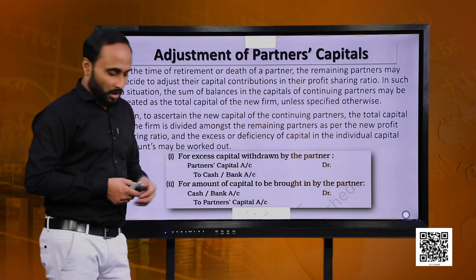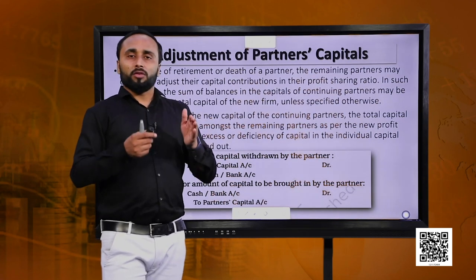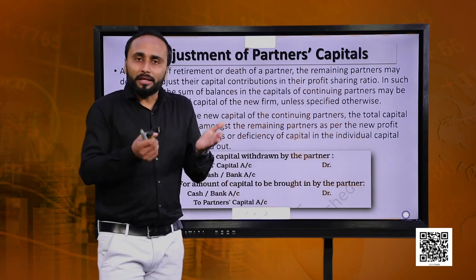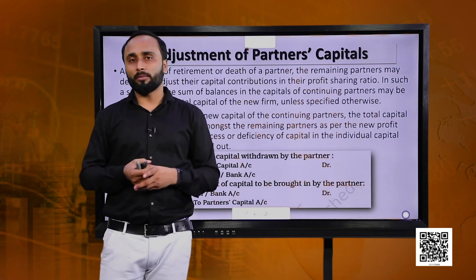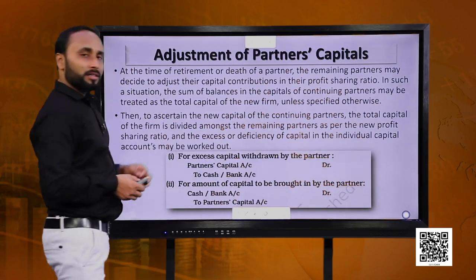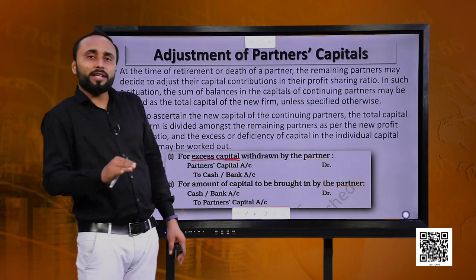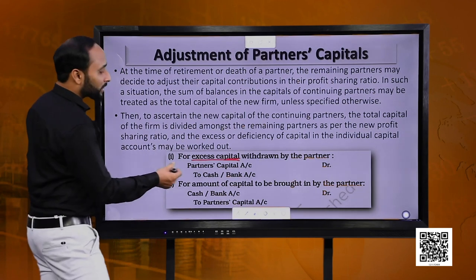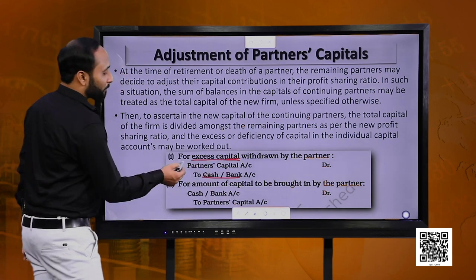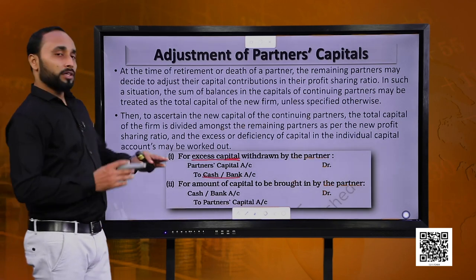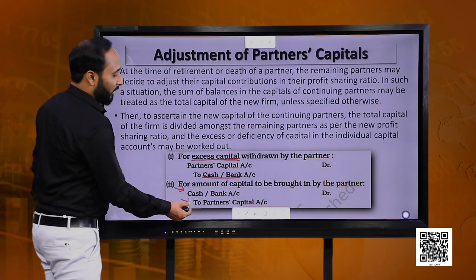Whenever there is an adjustment in capital, usually one or more partners will have to bring some extra cash to increase their capital in the new firm, while others might have to take some cash back to reduce their capital. When there is excess capital to be withdrawn, we credit the cash account and debit the partners' capital account. If partners are supposed to bring cash to the firm, we debit the cash account and credit the partners' capital account.